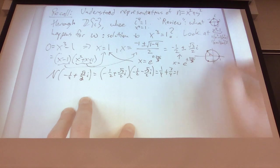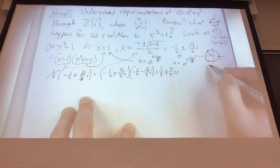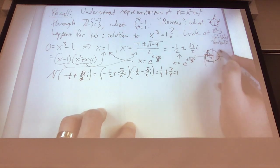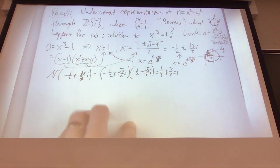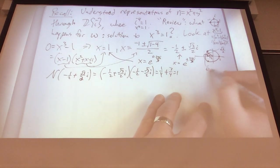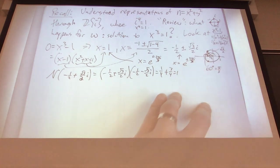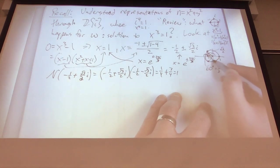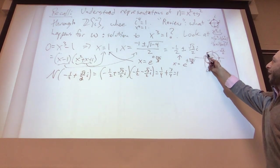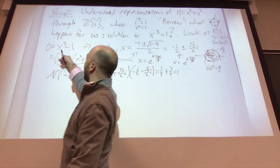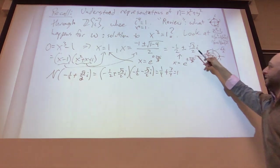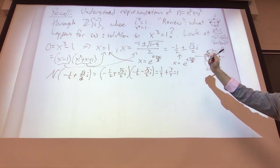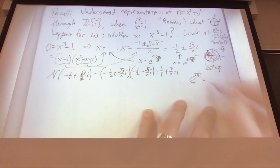These three solutions are x equals e to the zero, e to the plus two pi i over three, and e to the minus two pi i over three. The angle here is 60 degrees (pi over three), making this angle two pi over three. So these points are a third of the way around the unit circle, then another third, then another third — because they all cube to one, since e to the two pi i equals one.